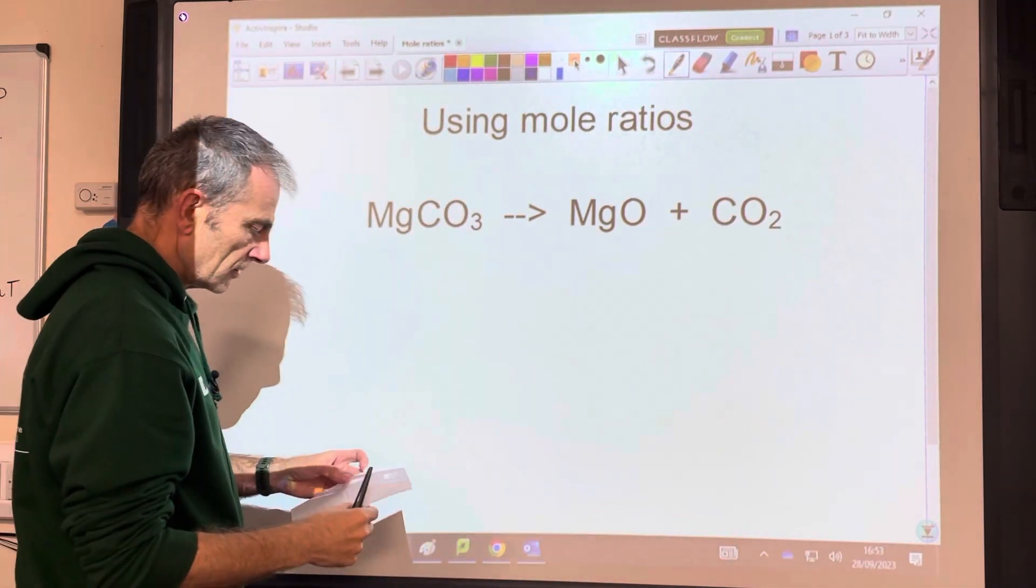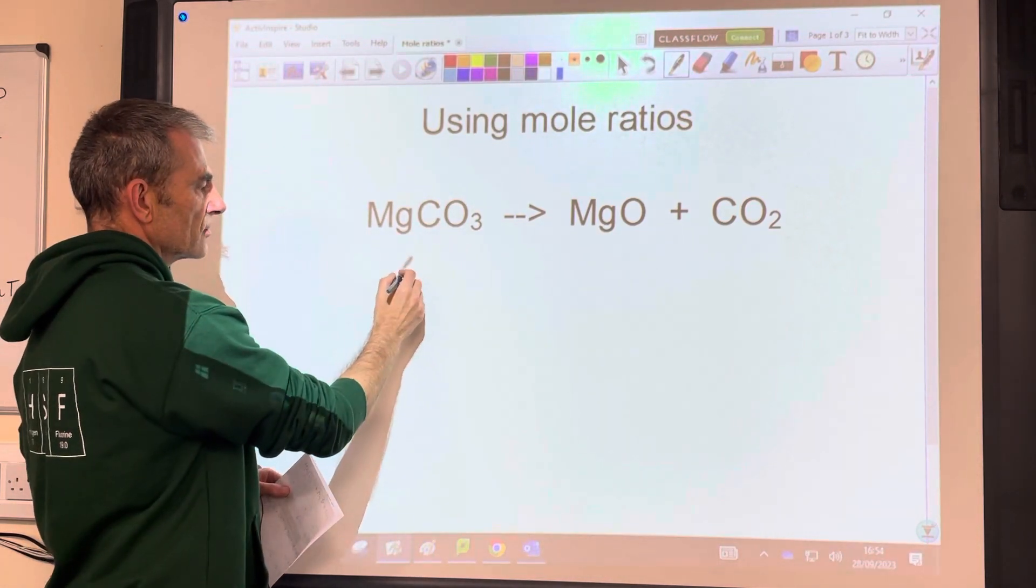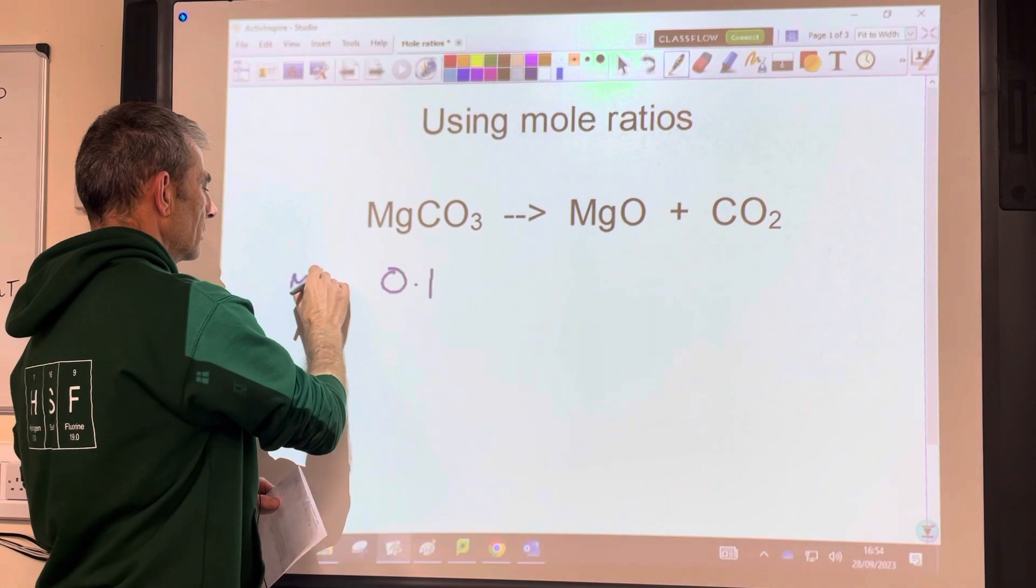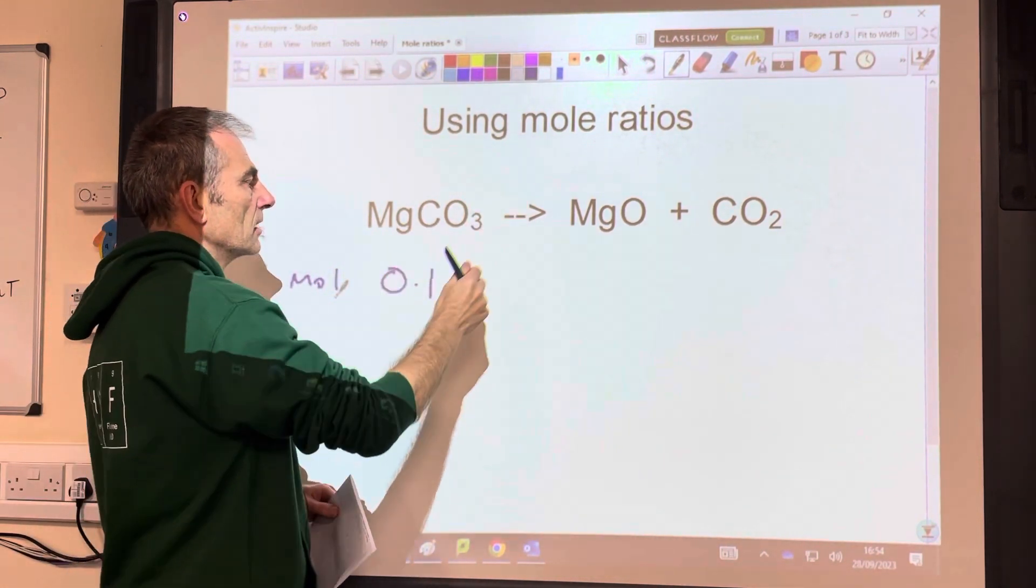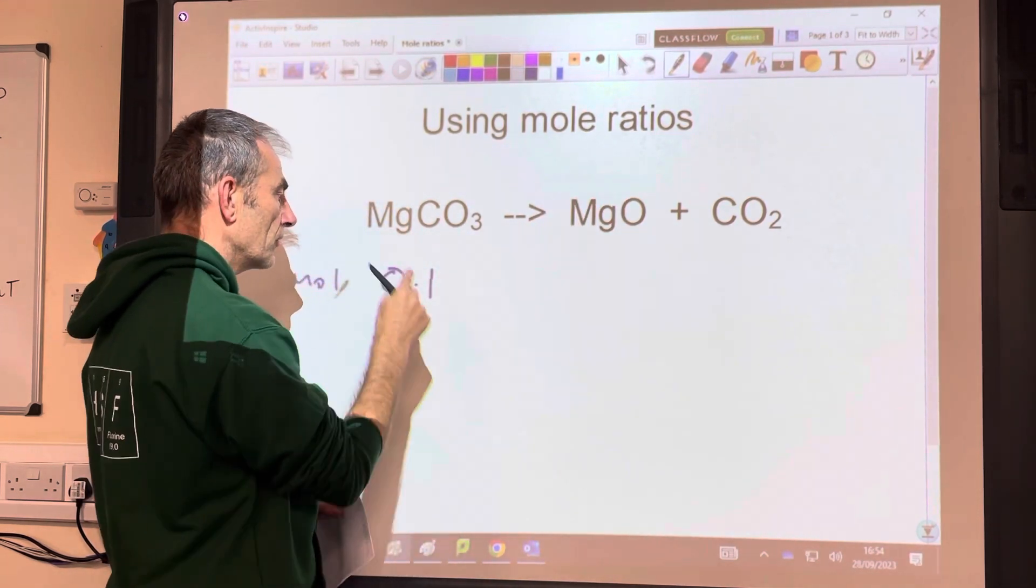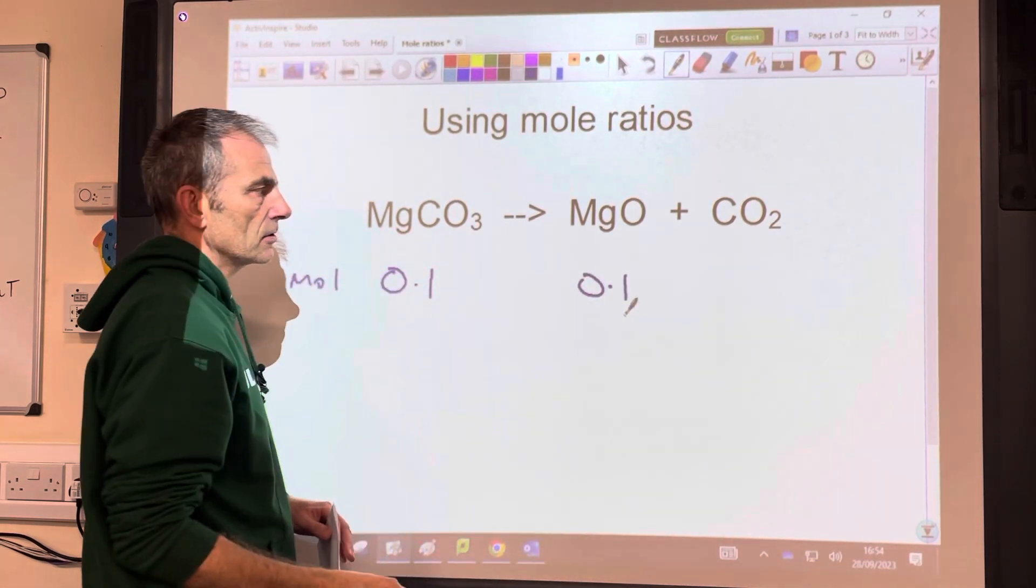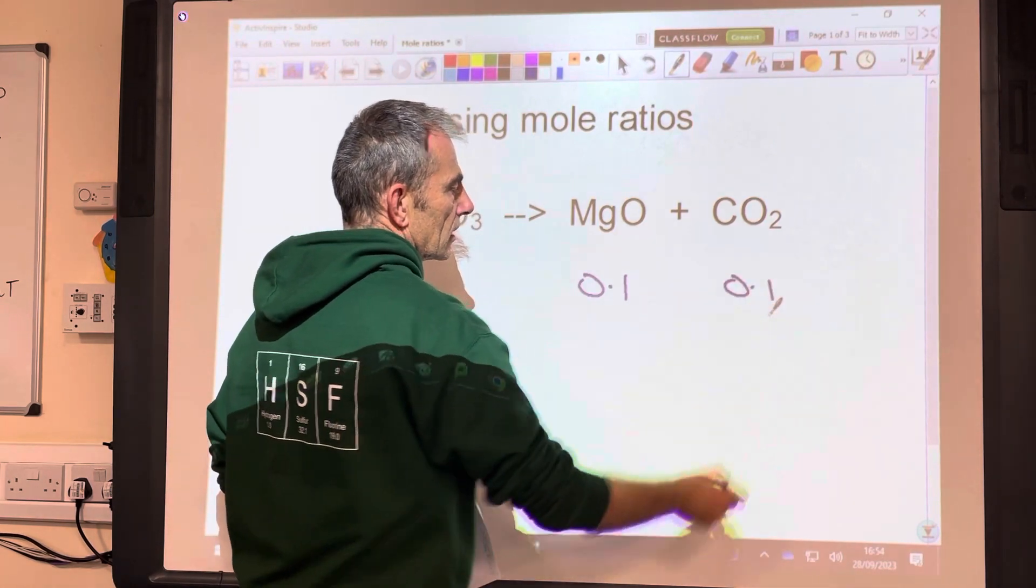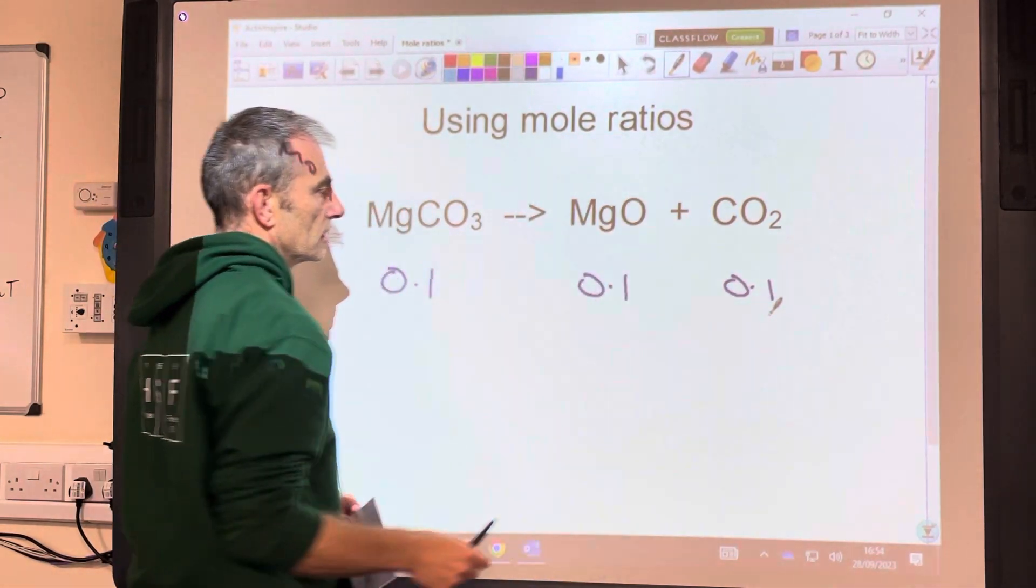So let's imagine we've got slightly different numbers. Let's suppose we start with 0.1 moles of the magnesium carbonate. So the ratio is telling us for every mole of that, we're going to make a mole of that. So if we've got 0.1 moles, we're going to make 0.1 moles of magnesium oxide. Likewise, we'll also make 0.1 moles of CO2 because that's a 1 to 1 ratio as well.